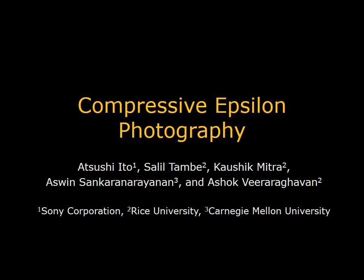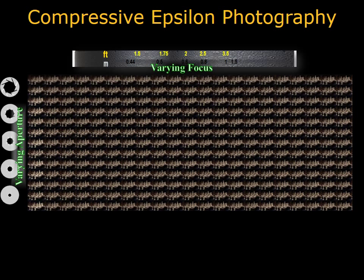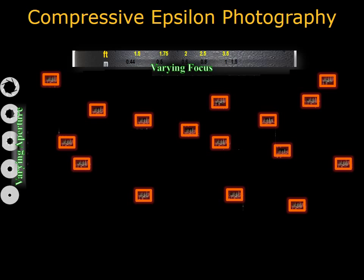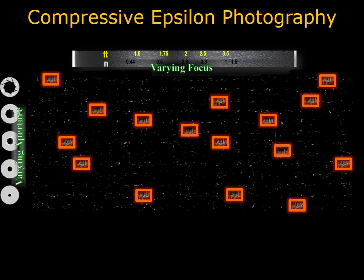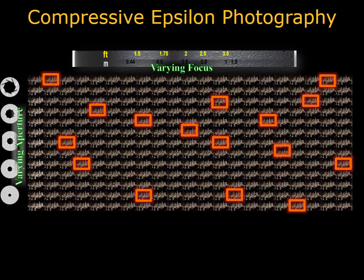Compressive Epsilon Photography is a framework which enables post-capture control of a camera's aperture and focus settings. The Epsilon Photography stack is the space of images formed by taking pictures of a scene with all possible camera parameter combinations. Exhaustively sampling this space is impractical given that a camera can have well over 1,000 parameter combinations. Instead, we show that the images in this space can be reconstructed from just a handful of photographs with carefully selected setting combinations.